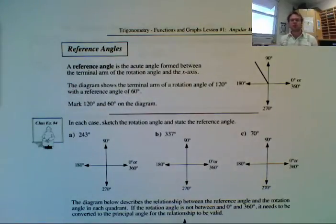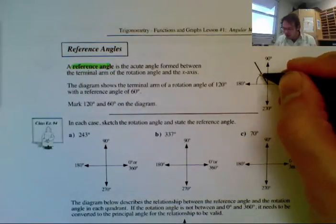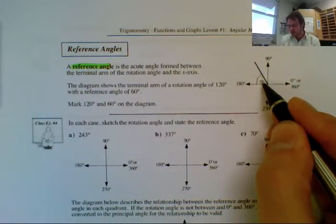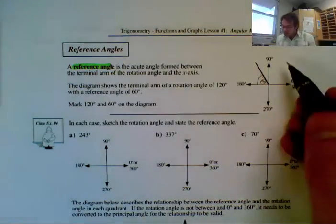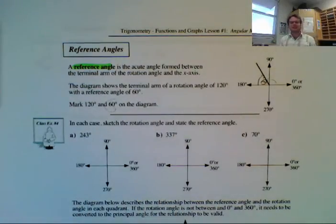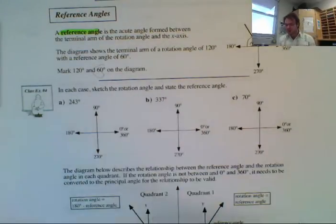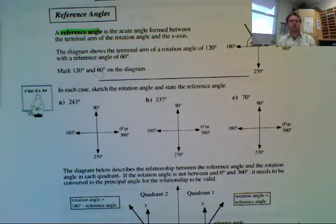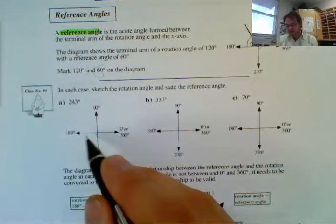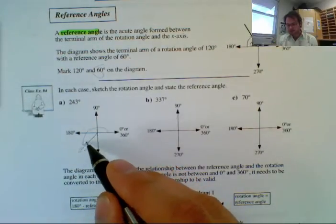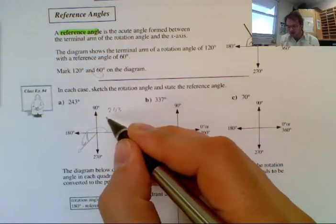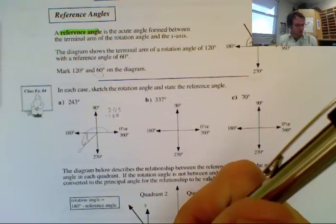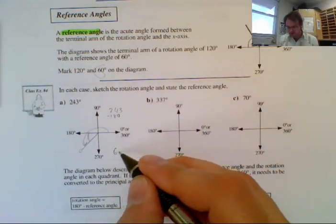So now we're going to look at something called a reference angle. A reference angle is always an acute angle from the x-axis — it's always going to come from the x-axis. So this theta here would be my reference angle. So if this was 120 degrees, my reference angle is going to be 60. From class example number 4, in each case, state the rotation angle and state the reference angle. So we have 243 degrees — it is less than 270 — so 243 is going to go like this. I want to figure out what is the reference angle, and that's going to be coming off of 180: 243 minus 180 gives me 63. So my reference angle is going to be 63 degrees.